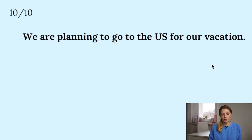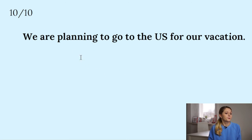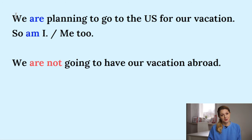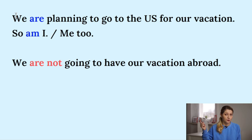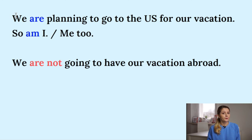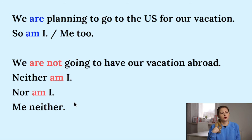And the last one. 'We are planning to go to the US for our vacation.' We are planning. If you want to agree, you say 'so am I' because 'I am planning to' — so am I. Negative: 'We are not going to have our vacation abroad' — neither am I, nor am I. Because I am not — I am not either — neither am I, nor am I.